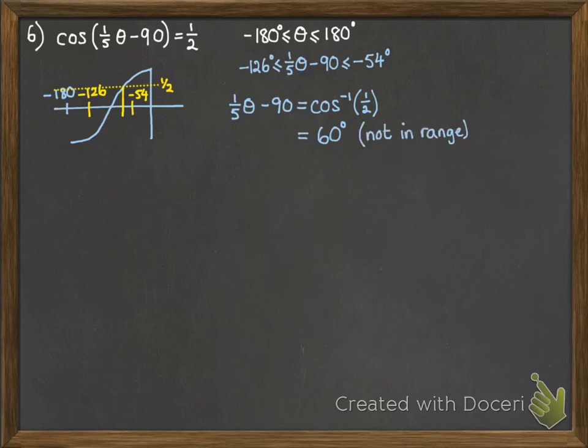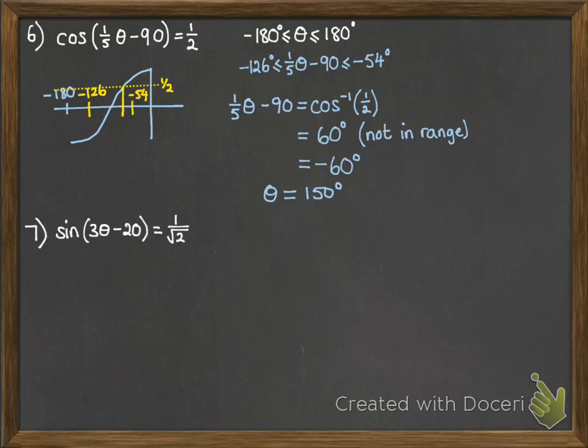Now, if you do it on your calculator, you get 60 degrees, but that's not in the range that we want to look at. So we need to think about the symmetry of the graph. That's also going to give us -60 degrees. So then rearranging, if θ/5 - 90 makes -60, we're going to add on the 90 times by 5 and you get 150 degrees.